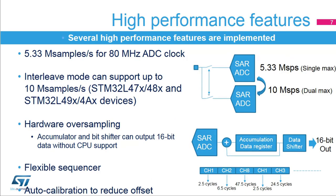The ADC supports up to 5.33 mega samples per second of conversion. By using dual interleaved mode, it can be extended to 10 mega samples per second. The ADC includes oversampling hardware which accumulates data and then divides without CPU help. The oversampler can accommodate from 2 to 256 times samples and right shift from 1 to 8 binary digits. The sequencer allows the user to convert up to 16 channels in any desired order, and each channel can have a different sampling period.